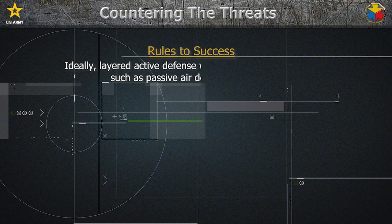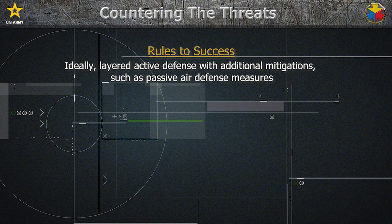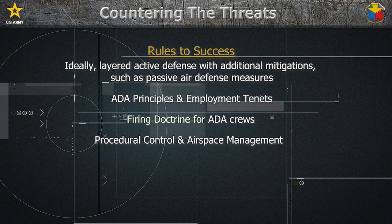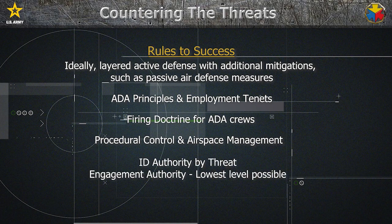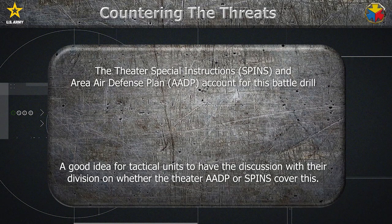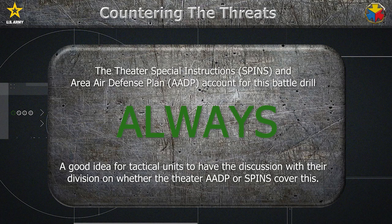Rule 6S: when possible, layer active air defense with passive air defense measures as additional mitigations. Follow ADA principles and employment tenets. ADA crews need guidance on firing doctrine, flying throughout the fight, accounting for munition expenditure, and firing sequence when in a layered defense. Procedural controls and airspace management maximize operations and identification procedures. Identification authorities should be thought out for each threat. Ideally, crews trained properly on Visual Aircraft Recognition, or VACR, may be delegated ID authority. Ideally, the DETR Special Instructions, or SPINS, and the Air Defense Plan account for this battle drill. It is always a good idea for tactical units to discuss with their division whether the DETR AADP or the SPINS covers this.